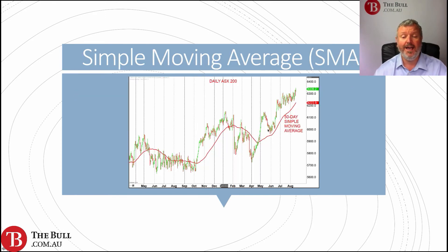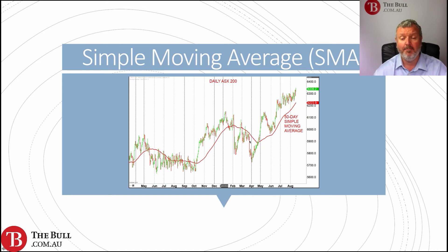Here on the same chart with the simple moving average, whilst price is above the moving average and the moving average is pointing higher, this is confirmation that we're in an uptrend. Back over here we see the market moving lower and below the simple moving average, and then we would regard the market as being more in a downtrend.